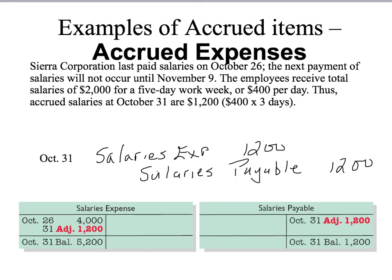The same would go for accrued revenue. I have earned the revenue over the period but have not billed for it. Therefore, what you would do is debit the receivable — debit accounts receivable — and credit the revenue.